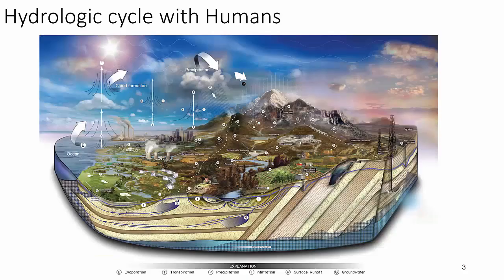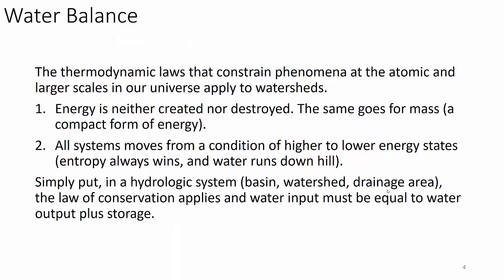As you recall, we talked about watersheds and started to put some relationships together in the dynamics of water movement through watersheds in its various forms: evaporation, transpiration, precipitation, infiltration, surface runoff, and groundwater. These relationships are mathematically quantifiable — we call that process the water balance. The thermodynamic laws that constrain phenomena at the atomic and larger levels also apply to watersheds. Energy is neither created nor destroyed, and the same goes for mass — water isn't created or destroyed, it just moves around.